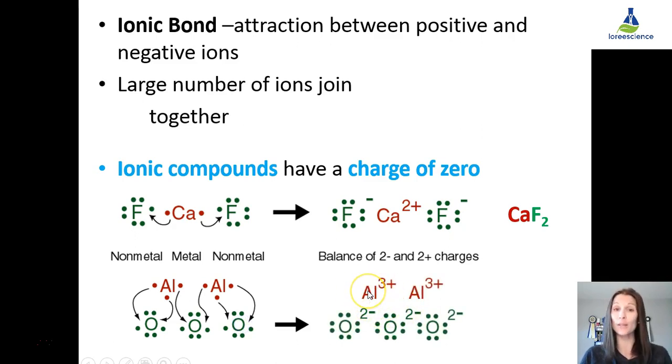You would have an aluminum, when it loses its three electrons, would have a positive three charge, and the oxygens, when they gain two, would each have a negative two charge. But if you added those up, two plus threes give you an overall a positive six, and we have two, four, six negatives, you would have a neutral compound.